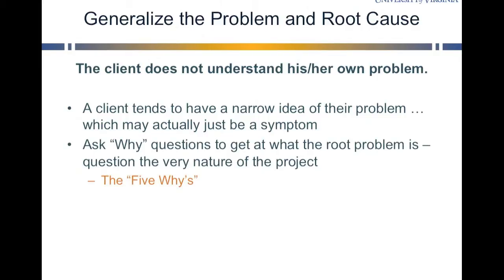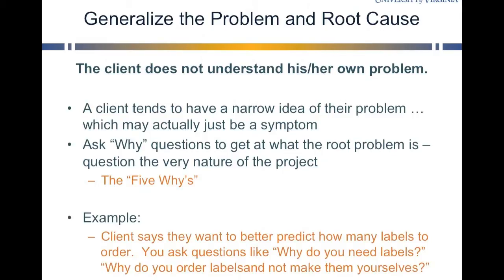Root cause analysis — one of the tools people use for that is called the Five Whys, where you just keep asking why. So if a client says their problem is that they have to wait too long on the labels they order for their wine bottles, you can ask why they have to wait so long. You might ask more fundamental questions like, why do you need labels in the first place? Why do you order your labels? Why don't you make your labels yourself? Instead of reducing wait time for ordering labels, you can reshape the problem — maybe you could make your labels yourself, or create them earlier in the process so you don't have to be waiting at the point of need.